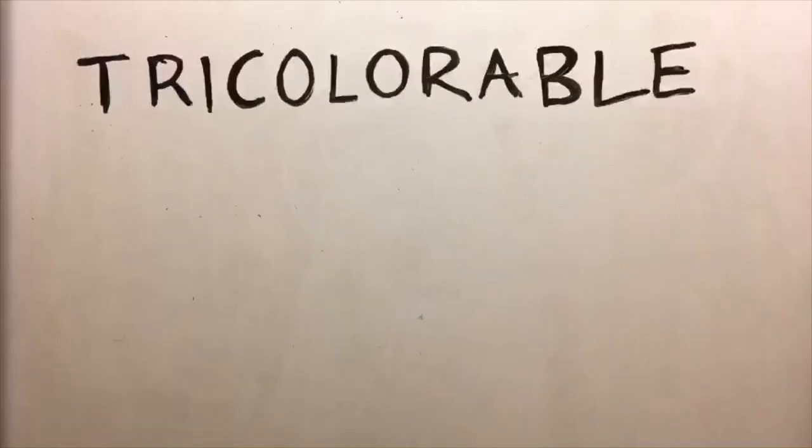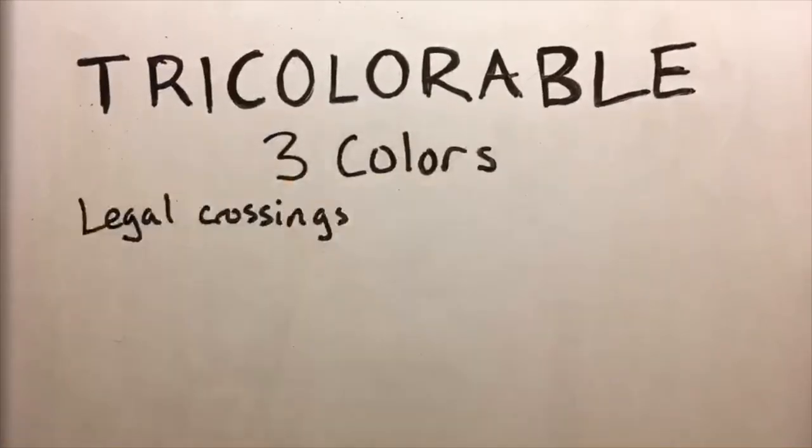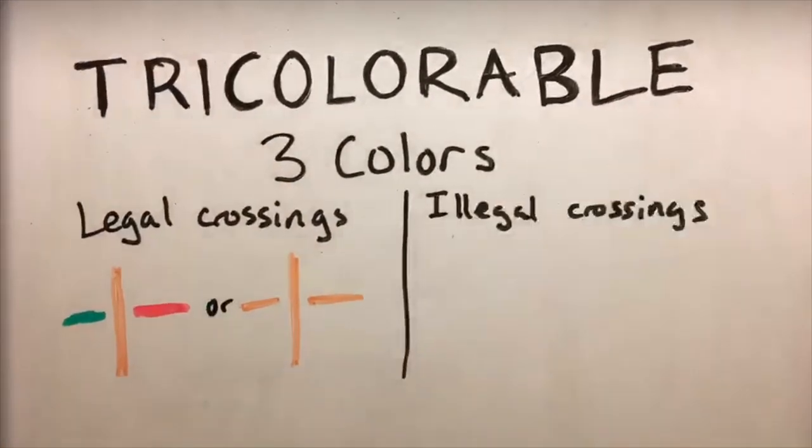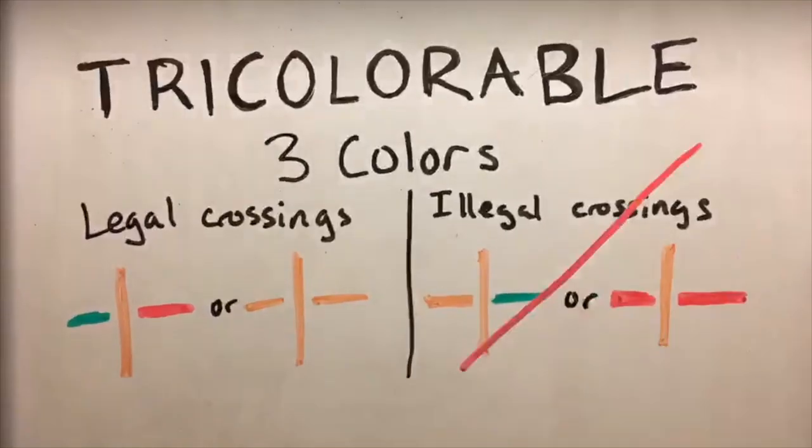We call a knot tricolorable, as you can color it with three colors, so that at each crossing, three different colors intersect, or all one color intersects. Intersections like this, or this, are not allowed.